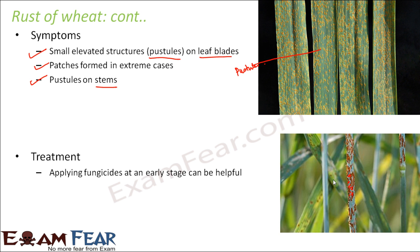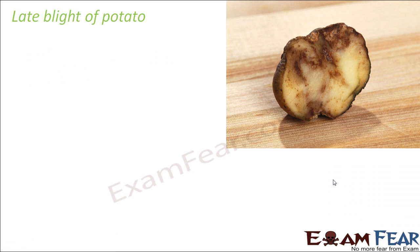For treatment, applying fungicides at an early stage can be helpful because fungicides will kill the fungi without harming the plant, and that is how the rust can be removed. However, when the infection spreads too much, fungicides might not be that helpful.